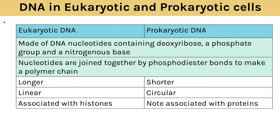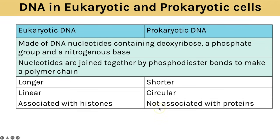We start topic four by comparing the DNA in eukaryotic cells and prokaryotic cells — comparisons mean similarities and differences. The two key similarities are that DNA is made up of DNA nucleotides for both, meaning it contains deoxyribose, a phosphate group and a nitrogenous base. The nucleotides are also joined together by phosphodiester bonds to make the polymer chain. The three key differences are that eukaryotic DNA is longer, eukaryotic DNA is linear occurring as straight lines in chromosomes, whereas prokaryotic DNA occurs as circular loops.